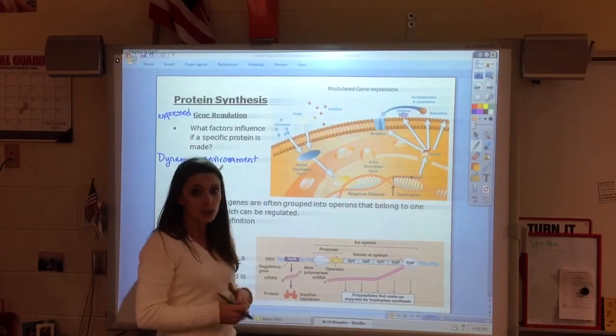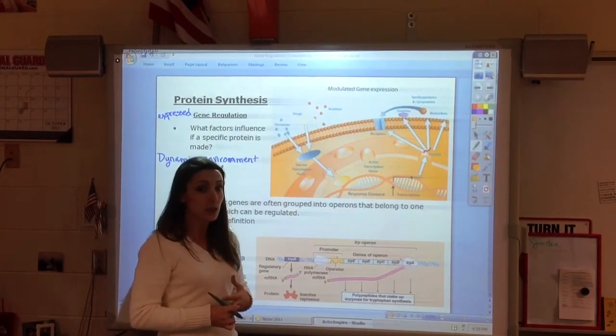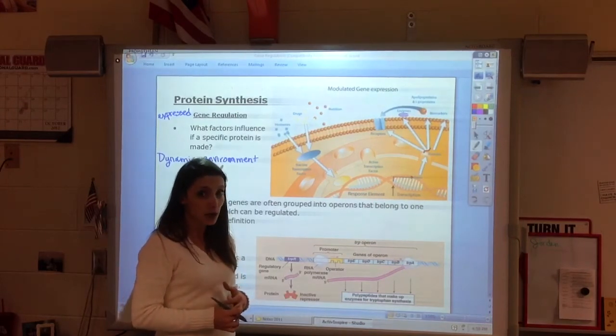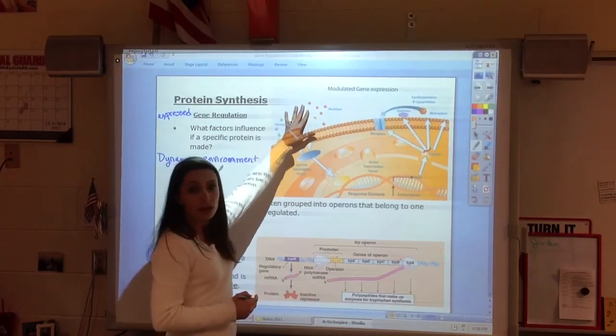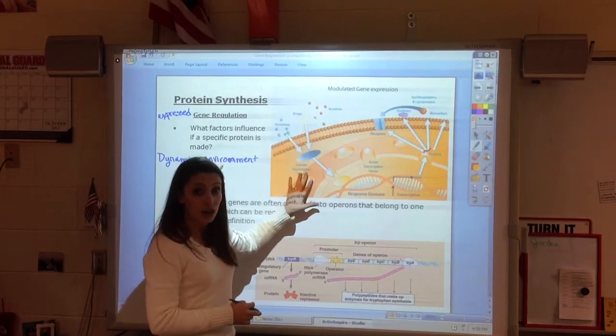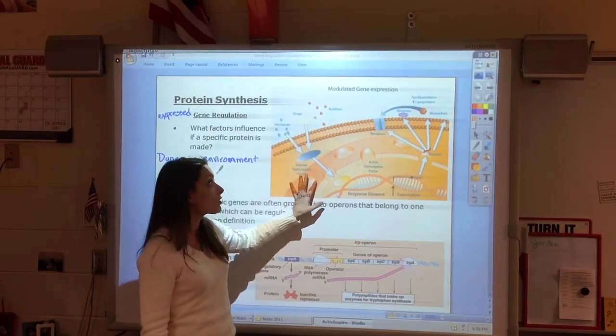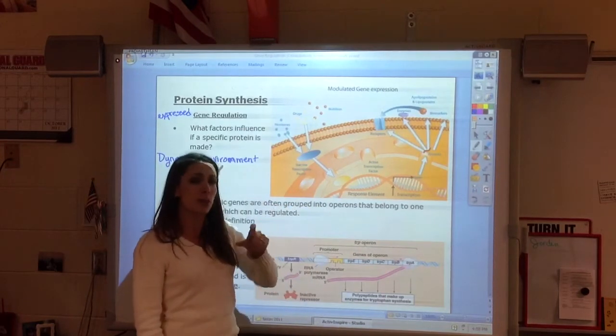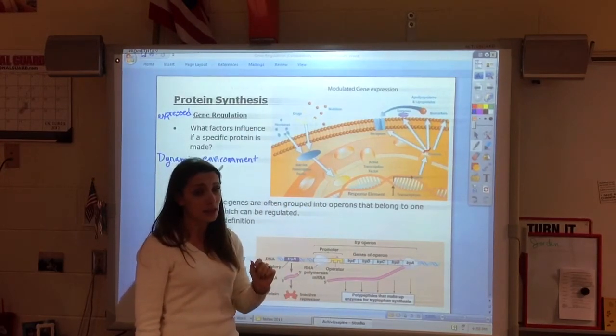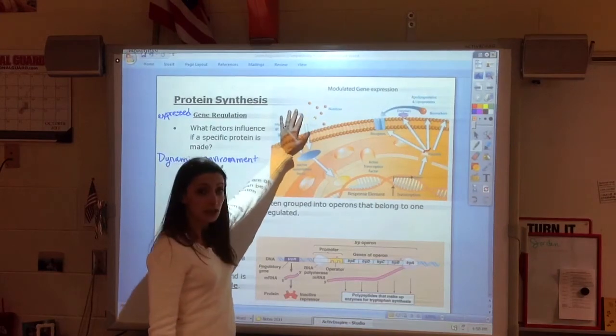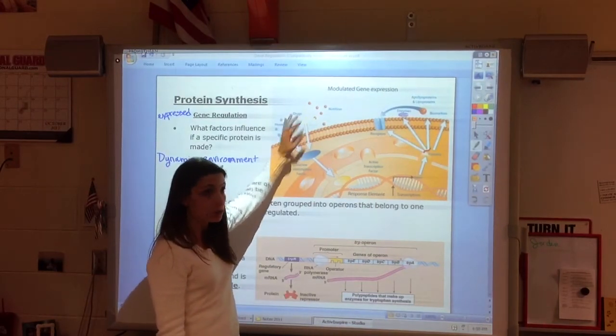A really good example is with insulin. Insulin is made upon demand by the body. When the blood sugar levels rise, then the pancreatic cells will make insulin. The beta cells of the pancreas will make insulin. So it's only a specific part of your body that makes insulin, and only in response to rising blood sugar levels.